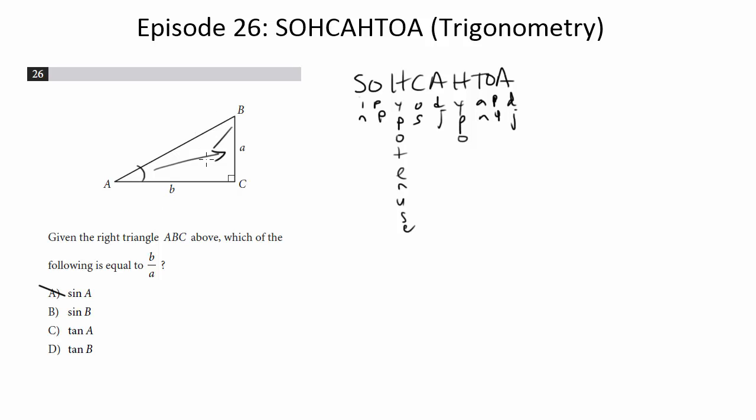How about sine of B? That's going to be B over the hypotenuse. Again, closer, but this hypotenuse is not going to be equal to A.